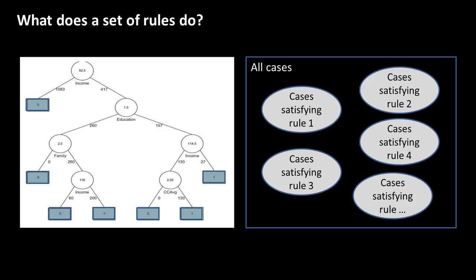In other words, we want a rule — income greater than this, credit card average, family size greater than that, education this — to ultimately reach a decision point where most cases fall into one category: acceptors or non-acceptors of the loan. There's no point if the cases satisfying the rule were equally possible to be acceptors or non-acceptors — the rule is not really helping us. If 90% of people who satisfy the rule fall into one category, then it's a useful rule because it helps predict the class.